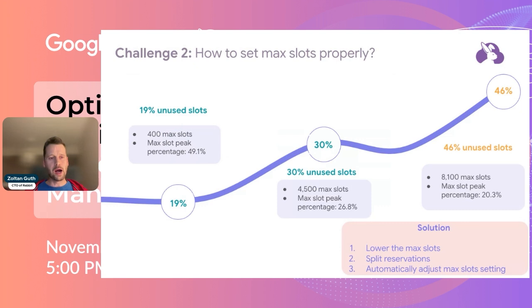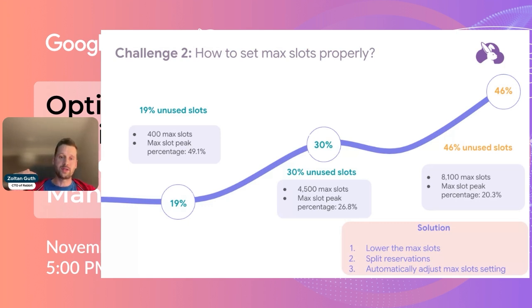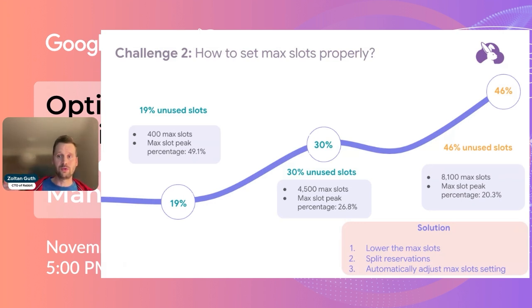Let me show you how big this waste could be. The unused slot part refers to how many slots you have available based on the autoscaler versus how many you actually used. It's impossible to fully utilize slots because the autoscaler increments by 50 slots. So if you need just 30 or 40 slots for a minute, you still can't provision fewer than 50.